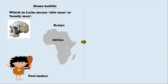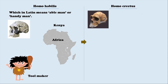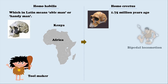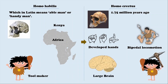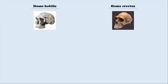The emergence of Homo habilis was followed by the emergence of Homo erectus. Homo erectus fossils date back to 1.75 million years ago. Apart from bipedal locomotion and well-developed hands, it had a large brain. Homo erectus made tools with great skill.